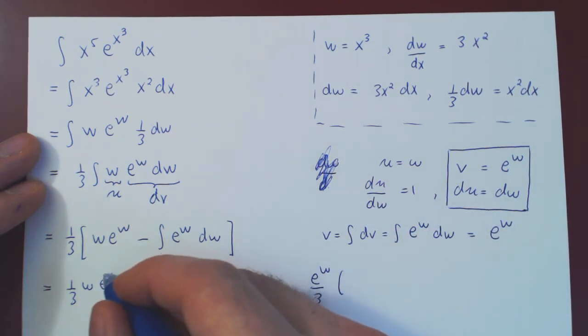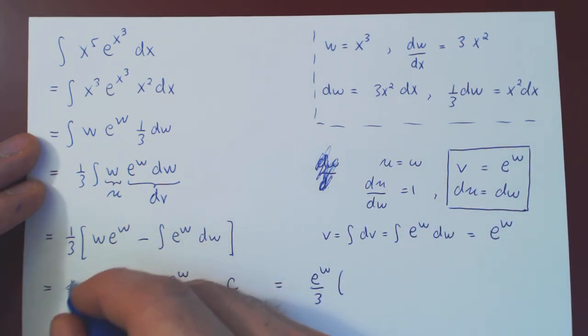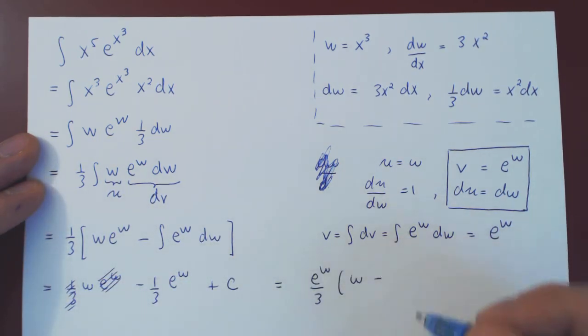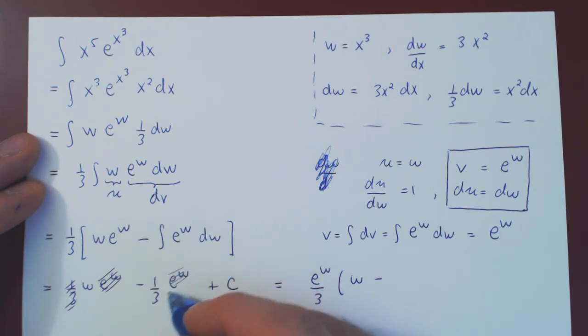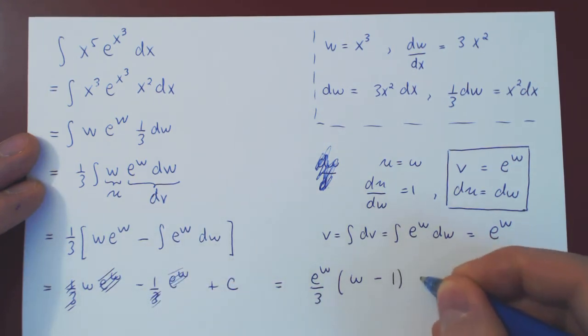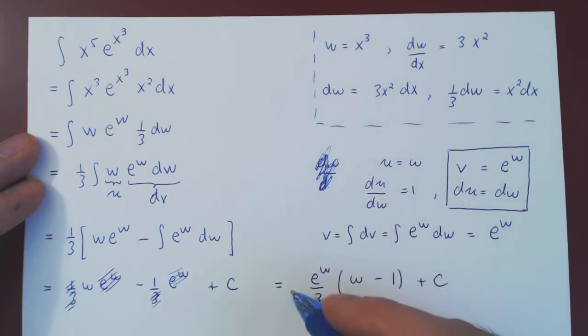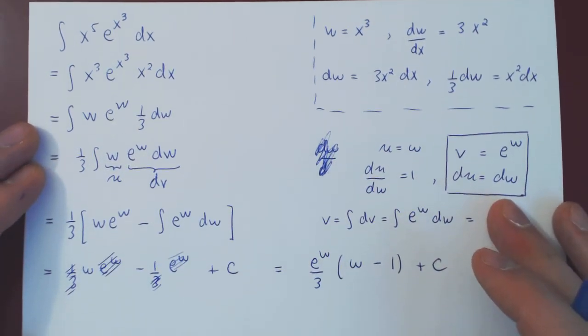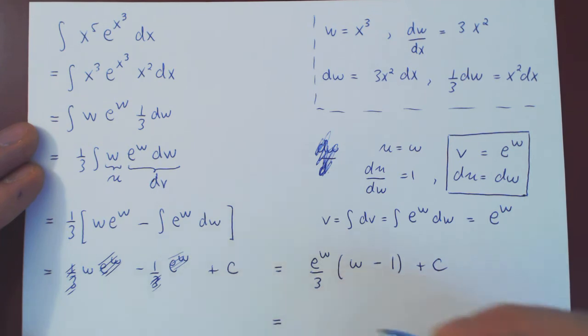And if we do so, what are we left with? Well, if you factor e to the w over 3, the first term you're left with a w, minus, and if you factor e to the w over 3, you're left with a negative 1, plus, of course, c. But we're not done, right? Since the integral was given as a function of x, we have to give our final answer back into a function of x.